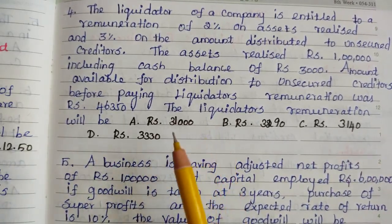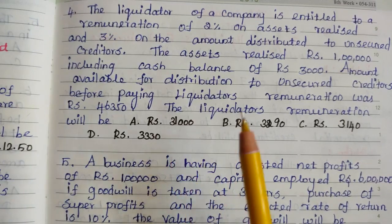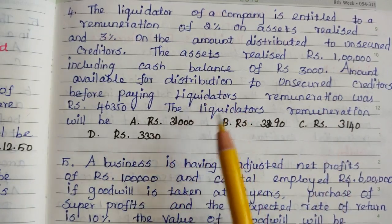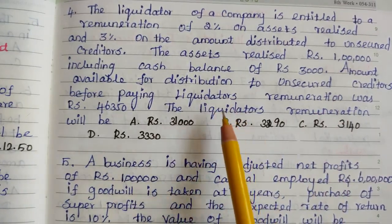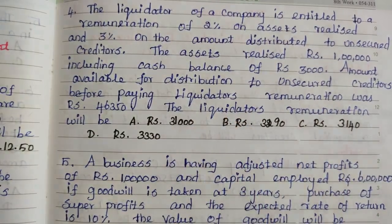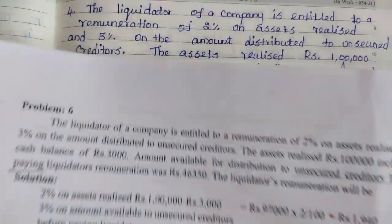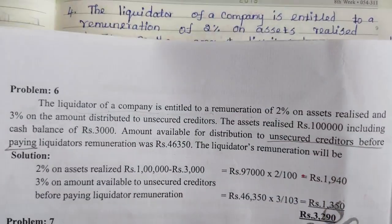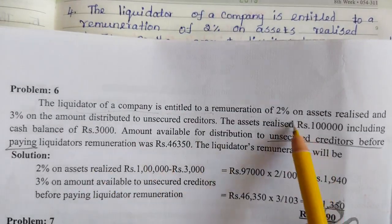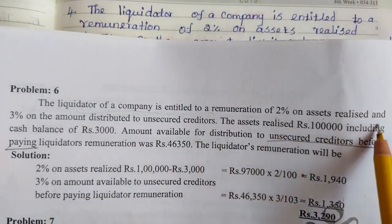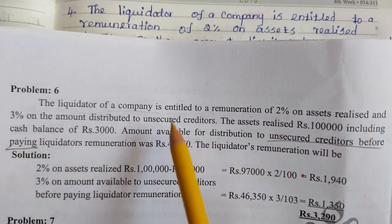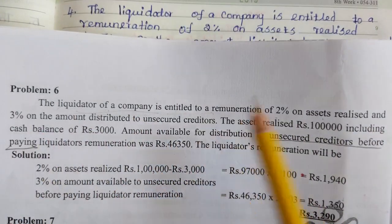Let's see how to calculate the answer. This question is from TRB 2005-06. Liquidator remuneration: 2% on assets realized, and 3% on amount distributed to unsecured creditors.